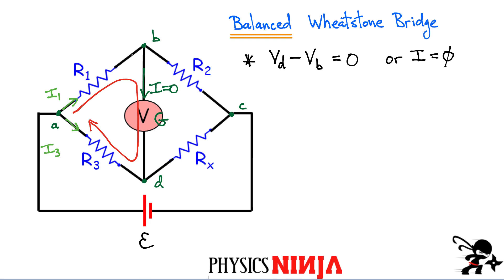If I have current I1 flowing up here, once it reaches the node labeled B, and there is no current flowing down the center branch because the bridge is balanced, that means you're also going to have the same current I1 flowing over here, and also the same current I3 flowing through this unknown resistance, because there's no current in that center branch.